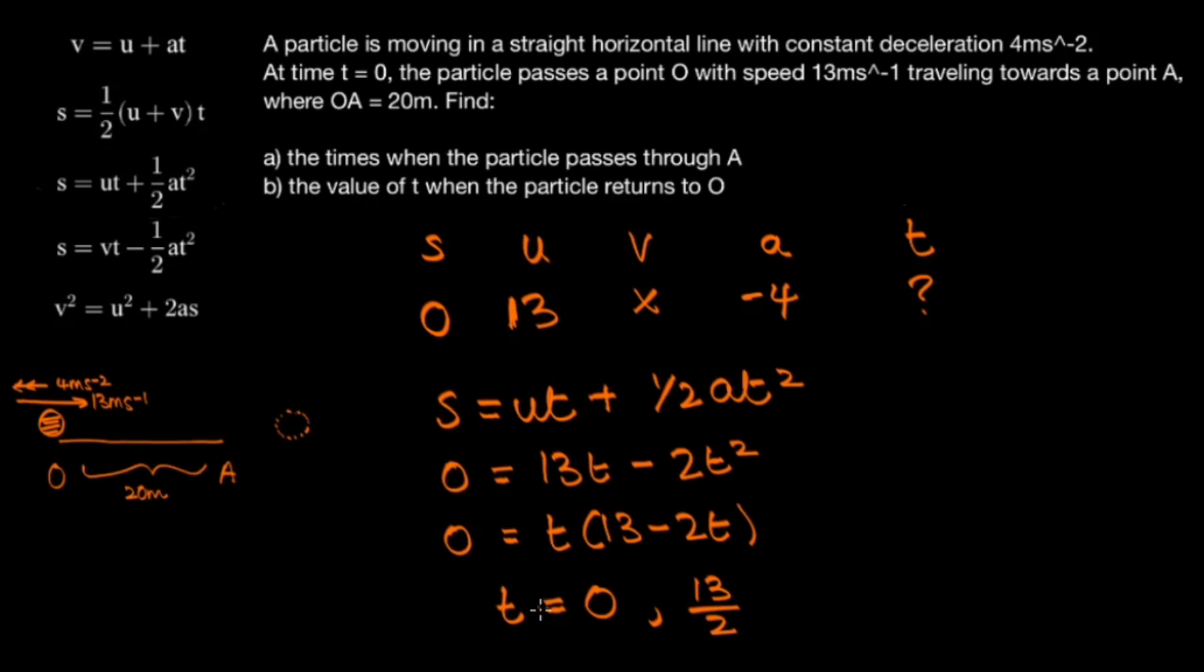And this makes sense because we know that the particle is at O when T equals 0 from the question. But we also know that 13 over 2 is larger than both the times when the particle passes A. And that makes sense because the particle passes O only after it passes A twice.